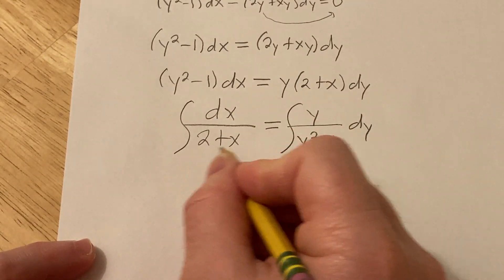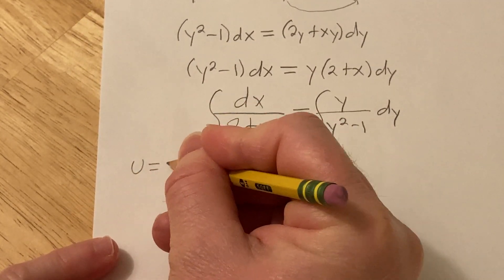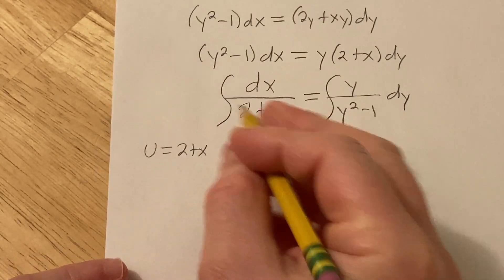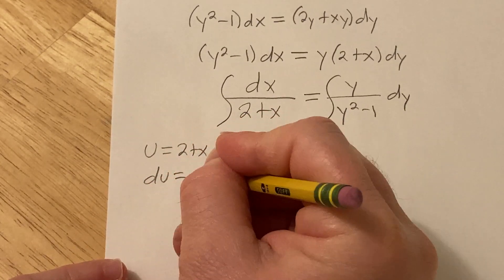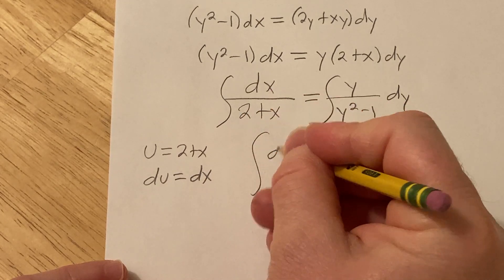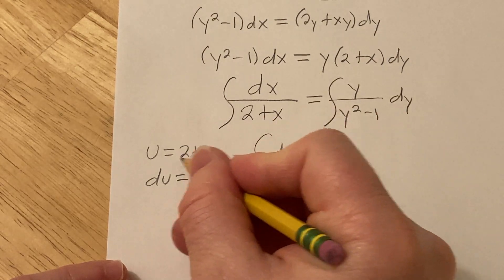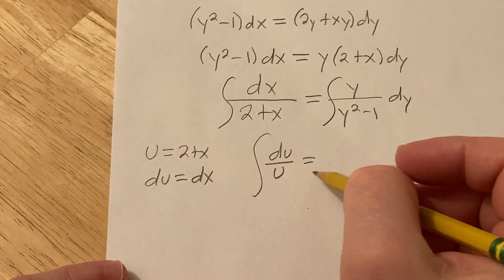This integral is really easy, you just make a substitution. I'll go ahead and show the work. You let u equal 2 plus x, so then du is equal to dx. So this becomes du over u. Because 2 plus x is your u and then dx is just du.